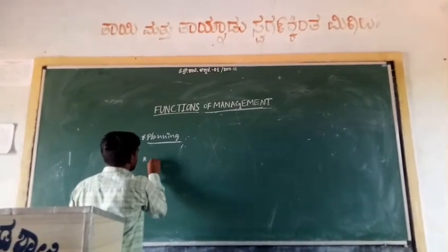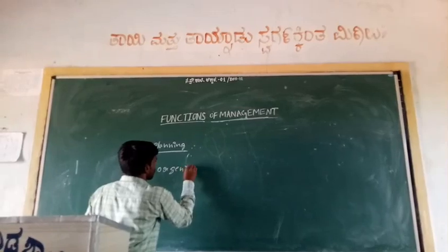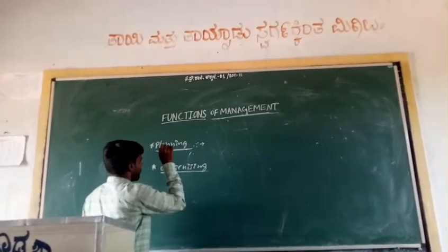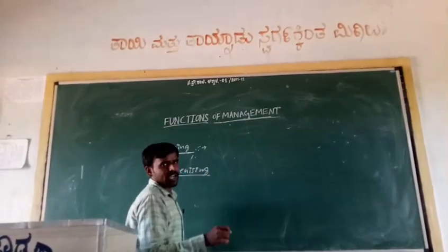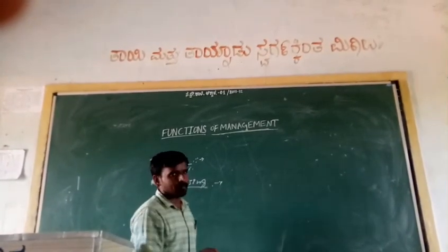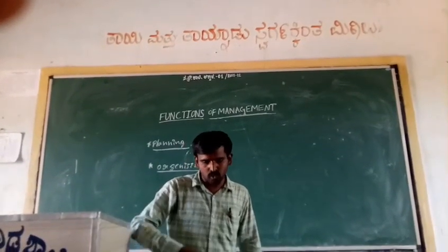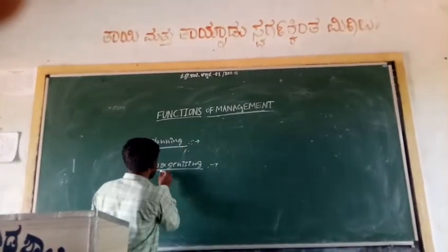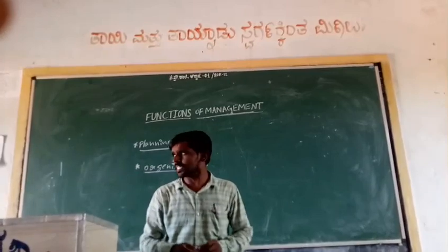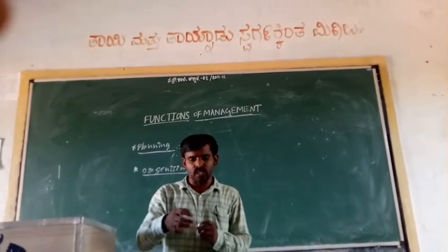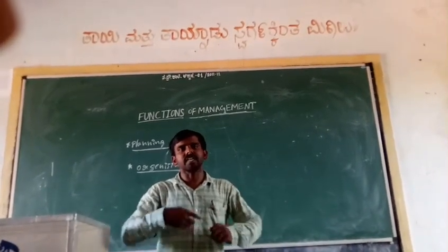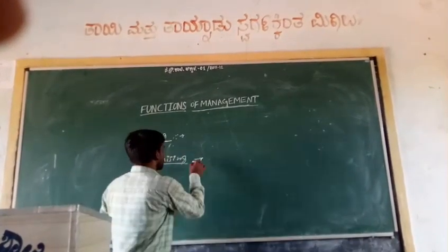The next function is Organizing. Once planning is over, the second function of management is organizing. Organizing is also called the plan of action, which means once you have planned, you are supposed to give a practical shape to your plan. Organizing is nothing but arranging the required resources in order to establish your plan — it is the implementation process, taking initiation of that plan.